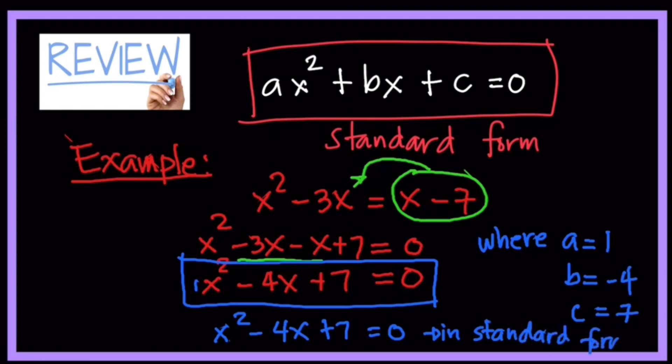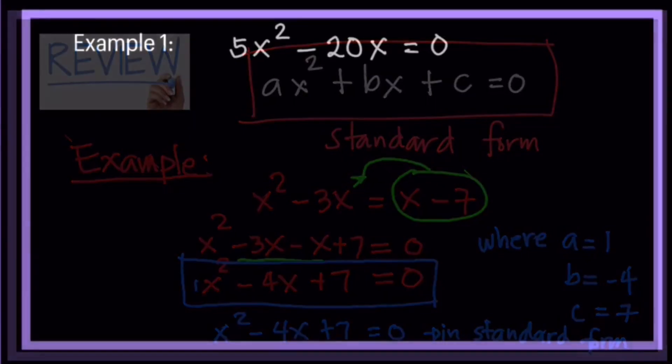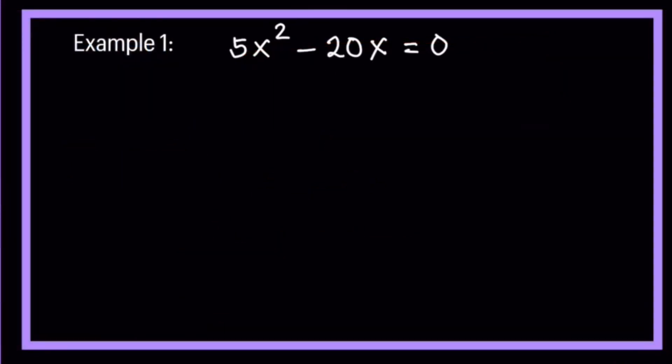Now our task is how to solve quadratic equation. So first example here, this example is 5x squared minus 20x is equal to zero. What do you think is missing here? It's incomplete quadratic equation. This is quadratic equation because the highest exponent here is 2. The only thing is c is missing, wherein the constant is missing here. So how do we solve this quadratic equation?